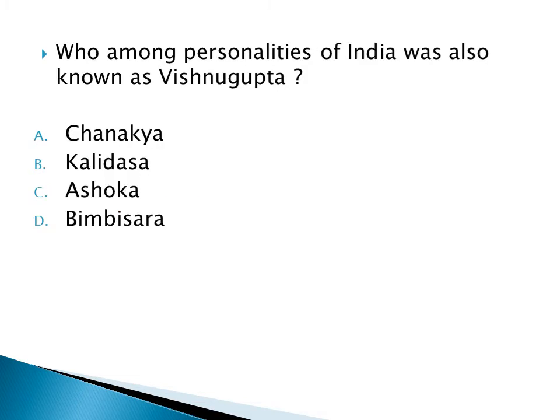Who among the personalities of India was also known as Vishnu Gupta? Option A: Chanakya, Option B: Kalidasa, Option C: Ashoka, Option D: Bimbisara. The right answer is Option A: Chanakya, who is also known as Vishnu Gupta.